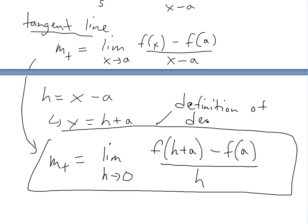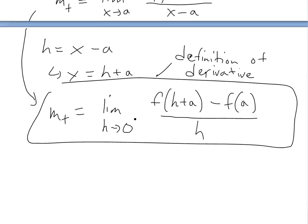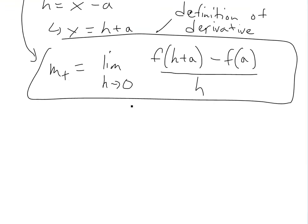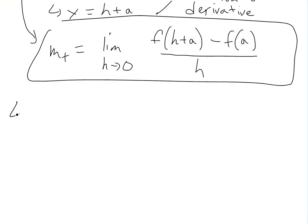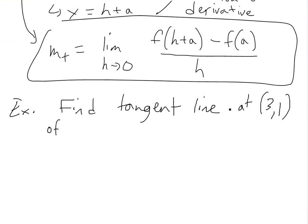You can see my other video on that. That's all a tangent line is — it is a derivative. Let's do an example: find the tangent line at the coordinates (3, 1), where the equation is y equals 3 over x.